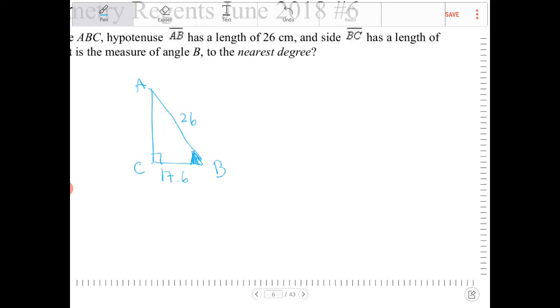17.6 is adjacent to angle B, and the hypotenuse is 26. So I have the adjacent side to angle B and the hypotenuse.